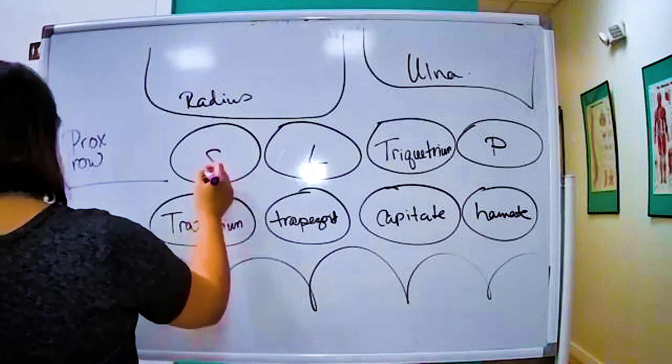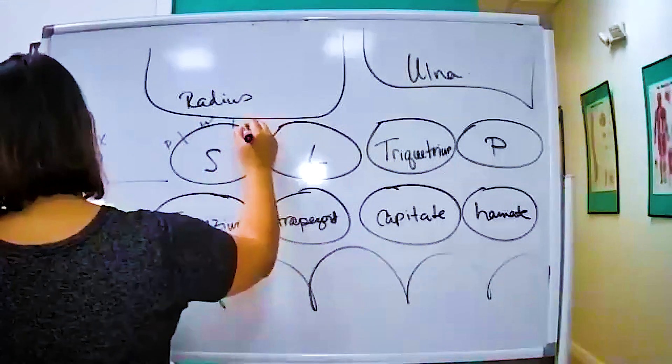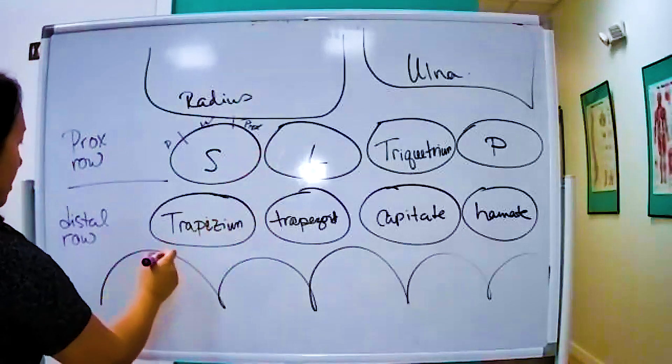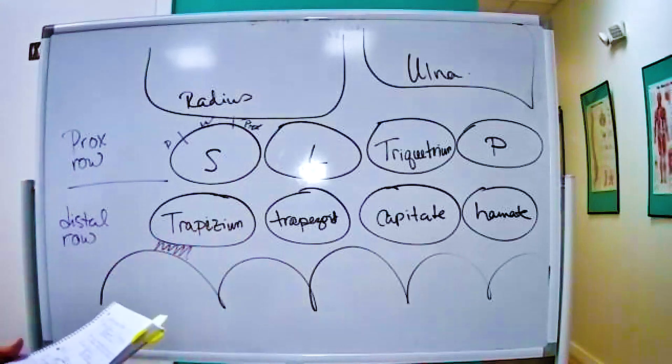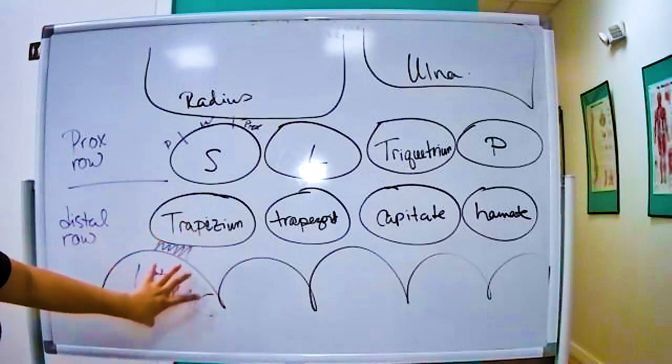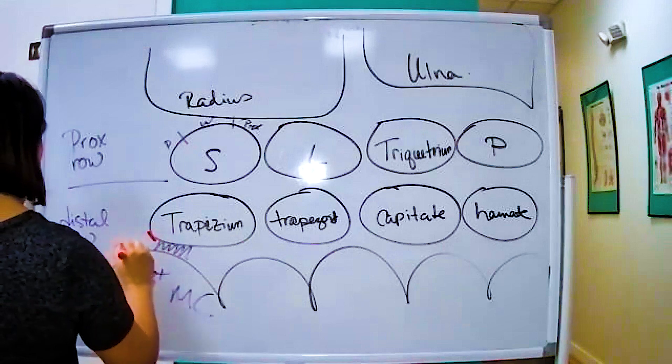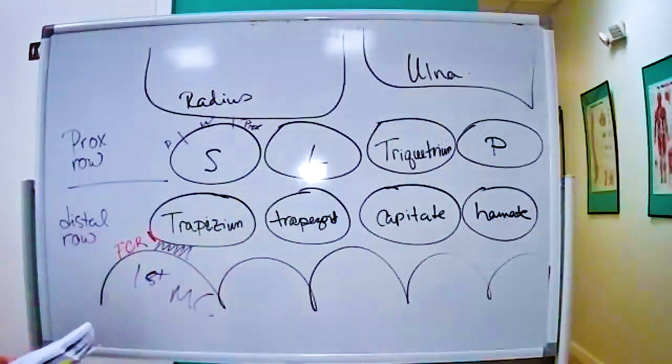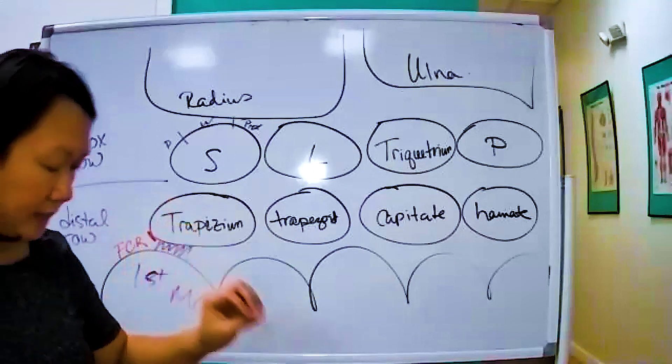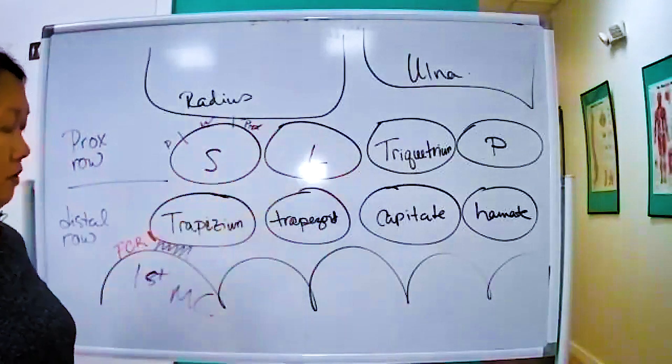That is important to know. So the scaphoid is divided into distal, waist, and then the proximal. The trapezium articulates with the first metacarpal. This is the first metacarpal, so we know this is then the CMC. And the trapezium has a little spot over here, the FCR, the flexor carpi radialis. And when I point these things out, it's usually because the muscles or the tendons where it's attached is important to know because it's going to provide stability for the carpal row.